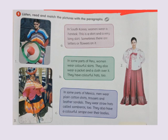Activity 1: Listen, read and match the pictures with the paragraphs. In South Korea, women wear a hanbok — this is a shirt and a very long skirt; sometimes there are letters or flowers on it. In some parts of Peru, women wear colorful skirts, a jacket, a cloth over it, and colorful hats. In some parts of Mexico, men wear plain cotton shirts, trousers, and leather sandals; they wear straw hats called sombreros and a colorful serapé over their bodies.